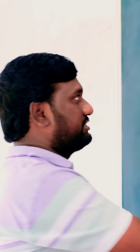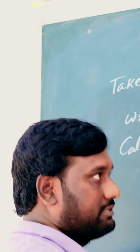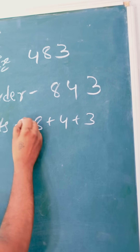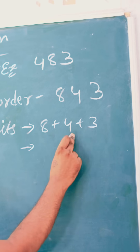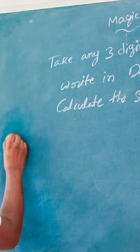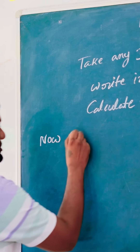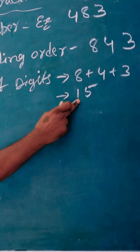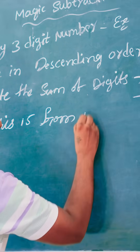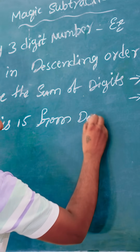Now calculate the sum of its digits — that means 8 plus 4 plus 3. So 8 plus 4 is 12, plus 3 is 15. Now subtract this 15 from the descending order number.